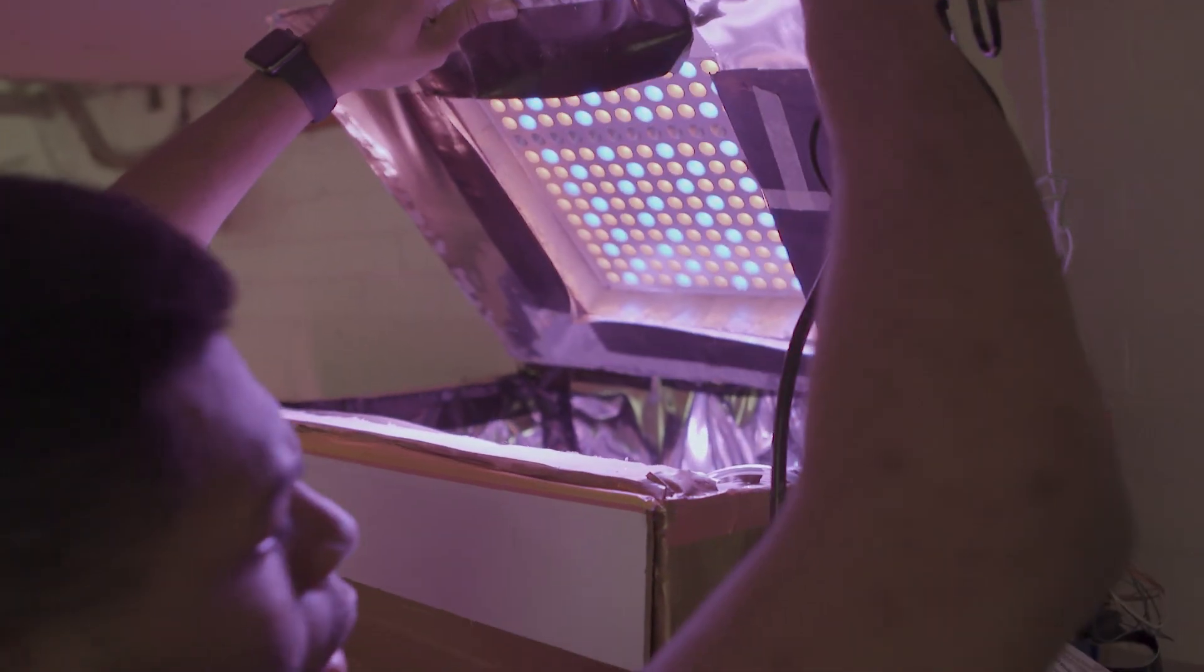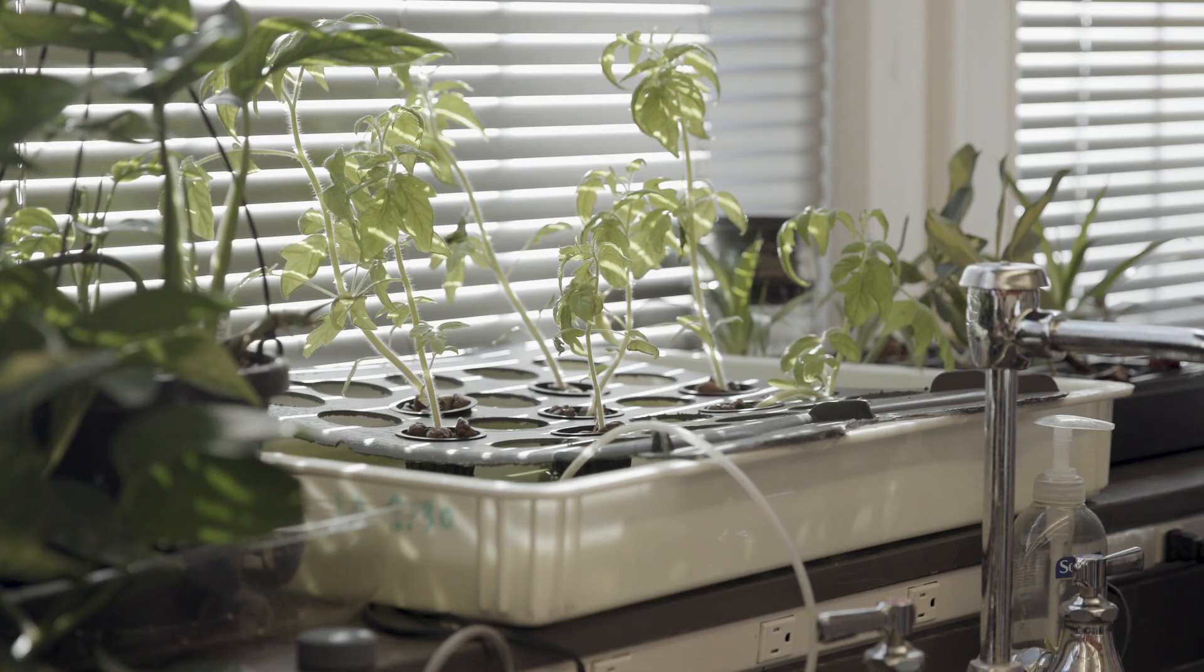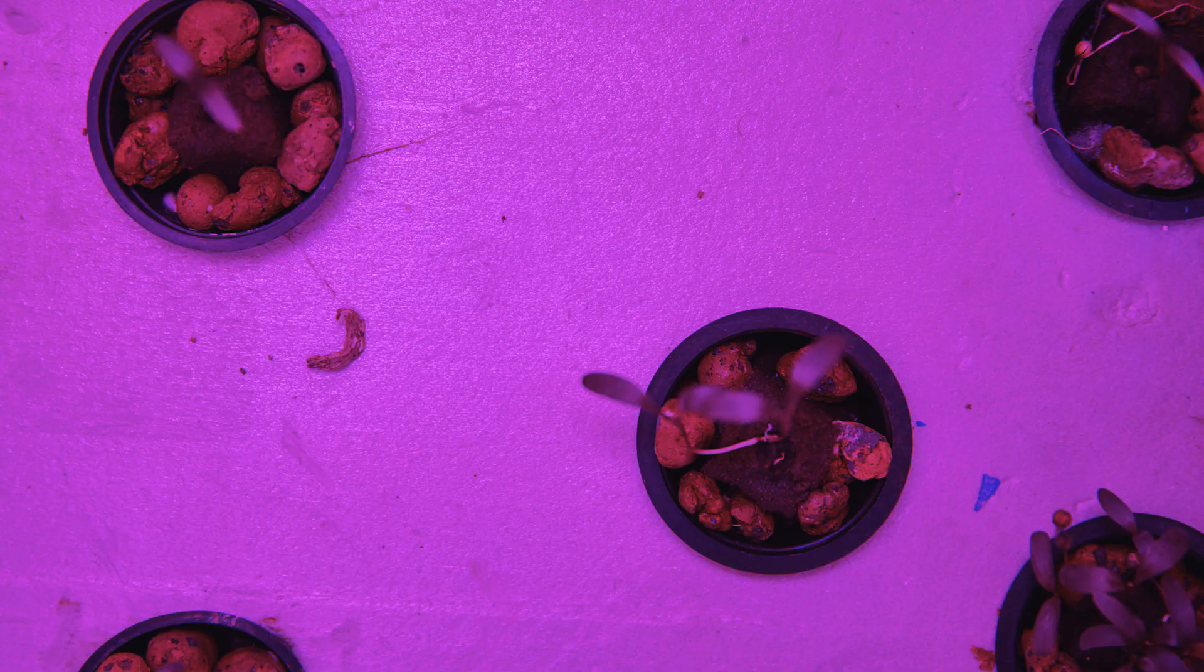We attach a grow light to the top. The Raspberry Pi also controls the light, so depending on the type of plant we can set it to be on for 10 hours or 14 hours, whatever.